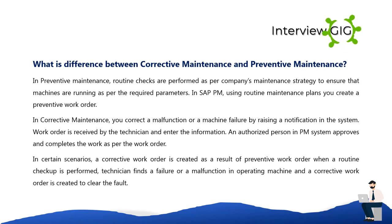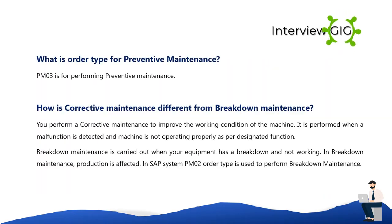In preventive maintenance, routine checks are performed as per the company's maintenance strategy to ensure machines are running as per required parameters. Using routine maintenance plans in SAP PM, you create a preventive work order. In corrective maintenance, you correct a malfunction or machine failure by raising a notification in the system. In certain scenarios, a corrective work order is created as a result of a preventive work order when a routine checkup reveals a failure or malfunction in an operating machine.